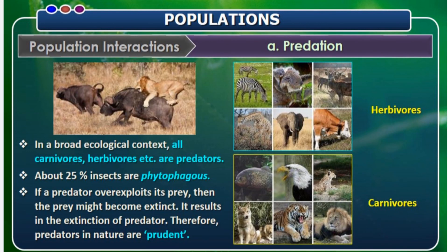The first interaction is predation. Predation starts even from the herbivore, because the herbivore eats up plants. These herbivores are again eaten up by carnivores. So predation starts from the herbivores where plants are always the producers. About 25% of insects are phytophagous, which feed upon plants. If a predator is over-exploiting the prey, in due course the predator will die off due to shortage of prey species. So the predator acts as a prudent predator.